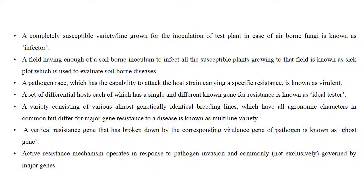A pathogen race which has the capacity to attack the host strain carrying a specific resistance gene is virulent. A set of differential hosts, each of which has a single and different known gene for resistance, is an ideal tester. A variety consisting of various almost genetically identical breeding lines which have all agronomic characters in common but differ for major gene resistance to a disease is known as a multiline variety.